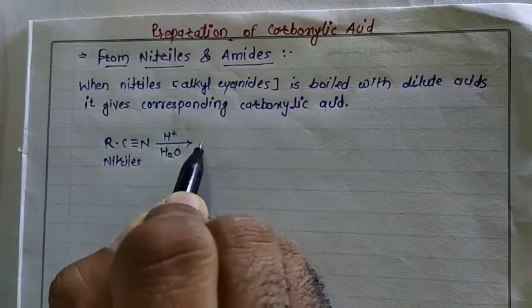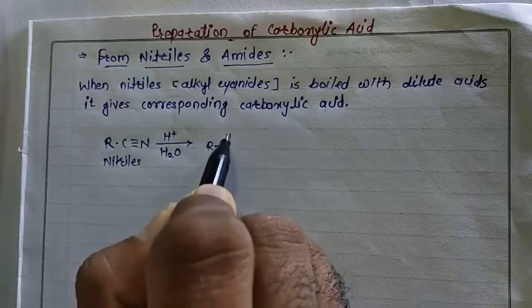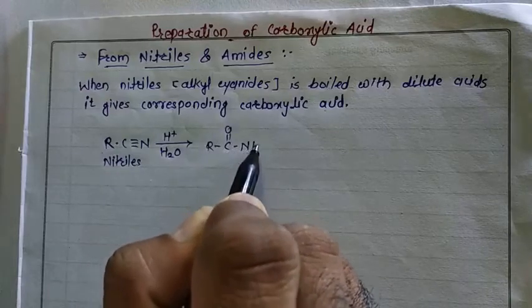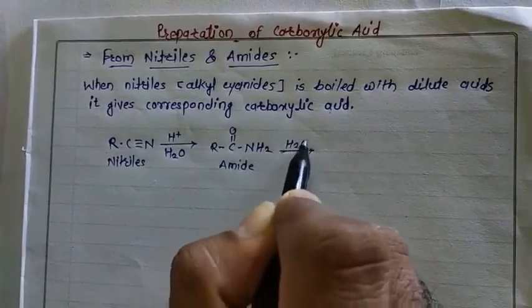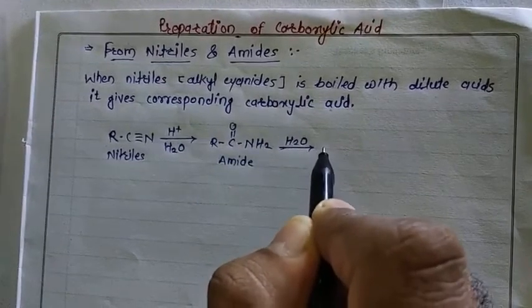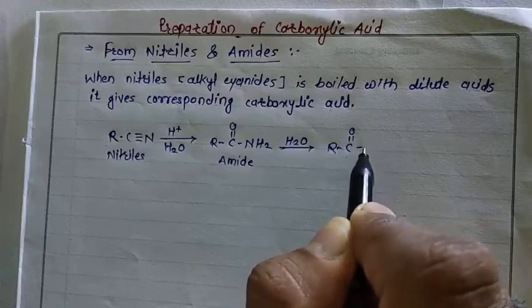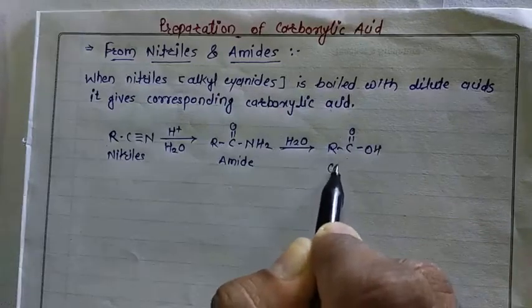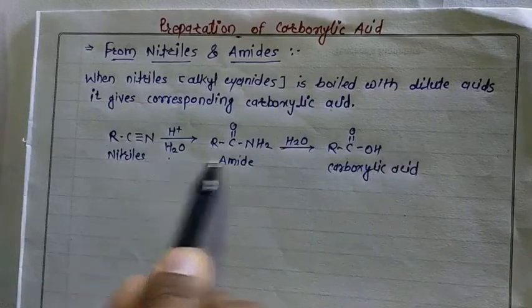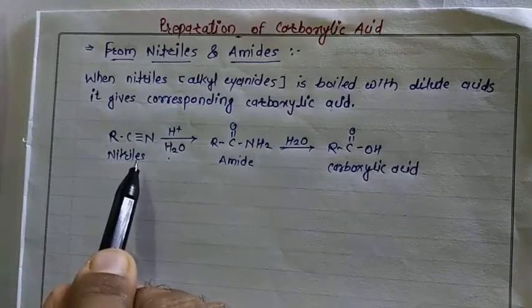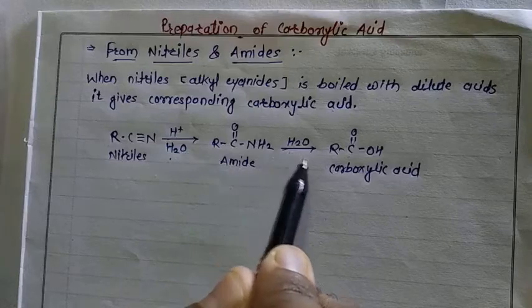This process is called acidic hydrolysis. In acidic hydrolysis, the nitrile is first converted to an amide — R–C(=O)–NH₂ — and then the amide is converted to carboxylic acid. So we use two molecules of water overall: nitrile first gives amide on acidic hydrolysis, and then amide on further hydrolysis is converted to carboxylic acid.